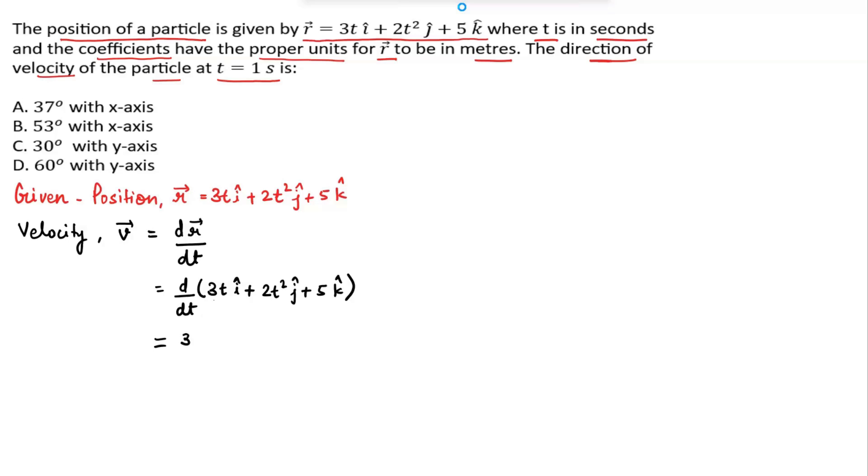Now differentiating these three terms: here 3 is constant, differentiation of t is 1, i cap, plus 2 is constant, differentiation of t squared gives 2t with j cap, plus differentiation of 5—5 is a constant, differentiation of any constant term is 0. So here we get the velocity v vector equals 3i cap plus 4t j cap. This is the value for velocity.